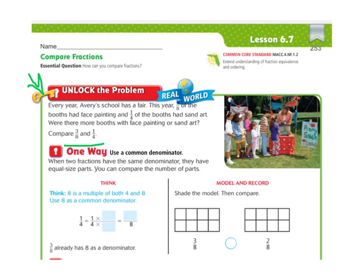The first way is the way that I taught you for Lesson 6.6. And that is to change those fractions so that they have a common denominator. So it says here, when two fractions have the same denominator, they have equal size parts, and you can compare them. So we're going to change our one-fourth into eighths, because we have three-eighths already to compare.